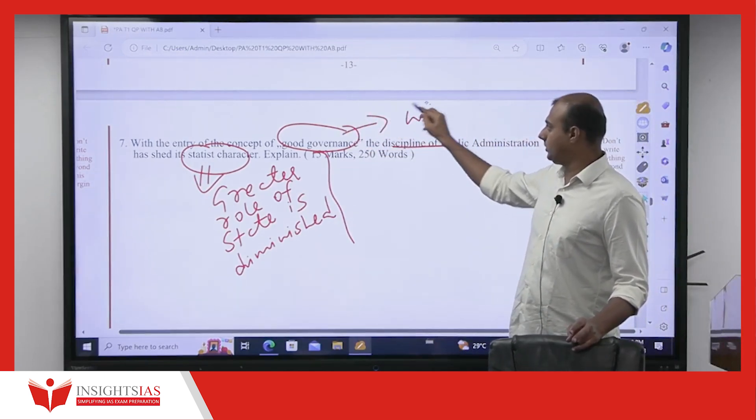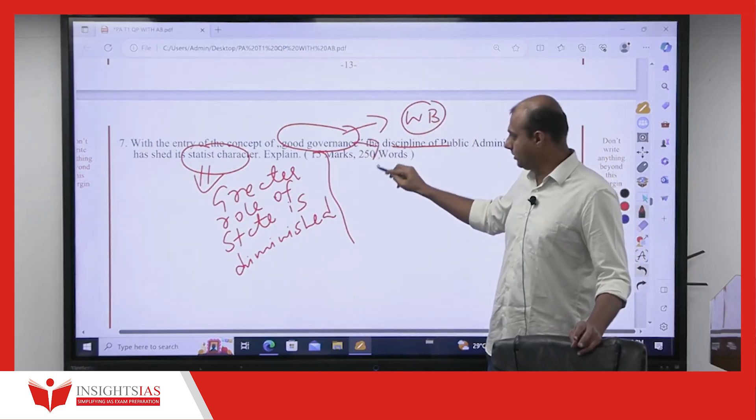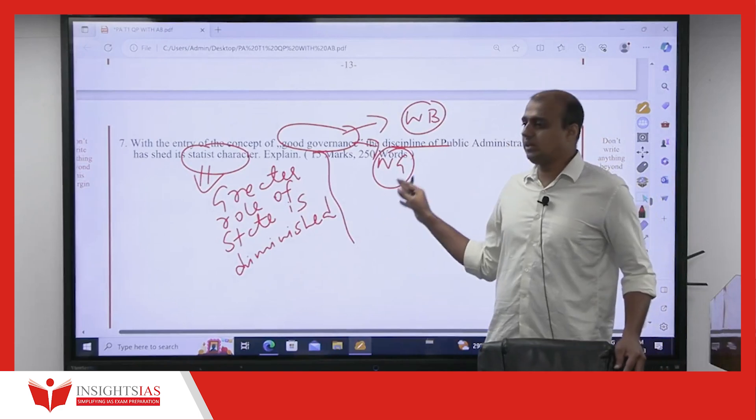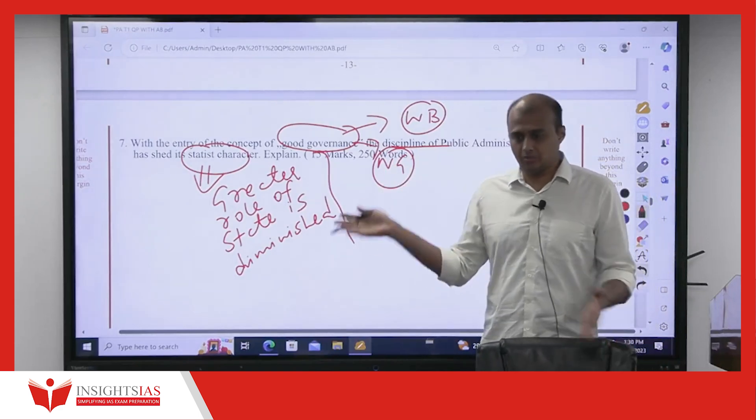One, of course, you have to refer to World Bank idea. Two, you can also refer to network governance idea. Then you tell, today's state is not the only actor. Everybody, whatever you told now.